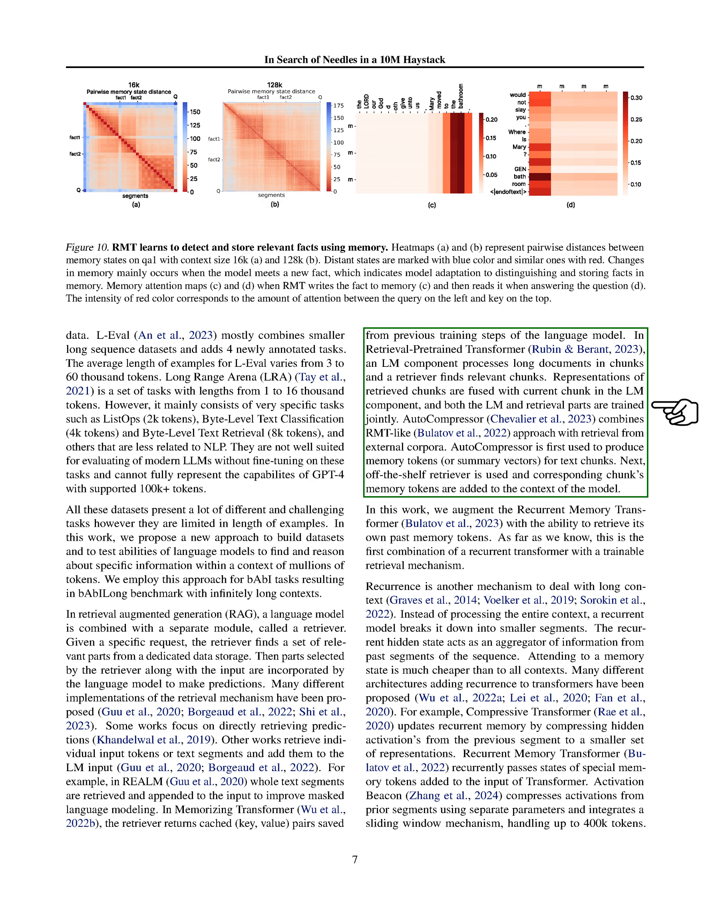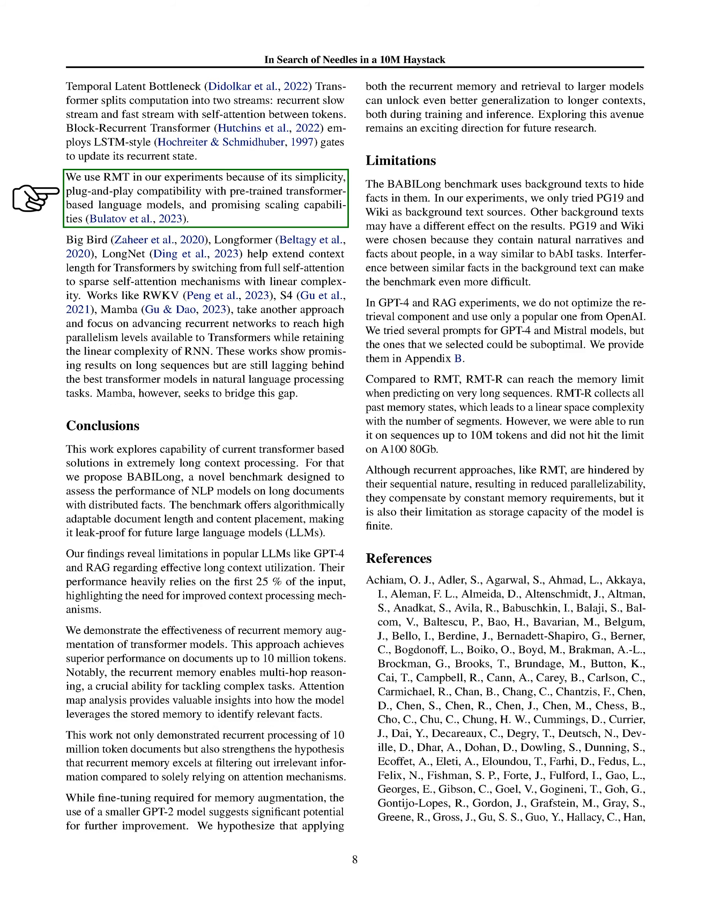We also introduce an enhancement to the recurrent memory transformer (RMT) by enabling it to retrieve its own past memory tokens, marking the first combination of a recurrent transformer with a trainable retrieval mechanism. Recurrence is another strategy we discuss for handling long contexts, where a model processes the context in smaller segments and uses a recurrent hidden state to aggregate information from past segments. Several architectures have been proposed to add recurrence to transformers, such as the compressive transformer, recurrent memory transformer, activation beacon, temporal latent bottleneck transformer, and block recurrent transformer. We choose to use the RMT in our experiments due to its simplicity, compatibility with pre-trained transformer-based models, and promising scaling capabilities.